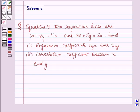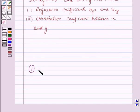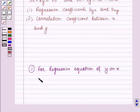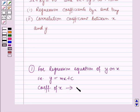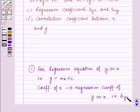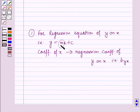Before starting the solution of this question we should know some results. First, for the regression equation of y on x, that is y is equal to mx plus c, the coefficient of x is called the regression coefficient of y on x, given by byx. So here the regression coefficient of y on x is m, which is denoted by byx. Also the slope of this line is called the regression coefficient of y on x.